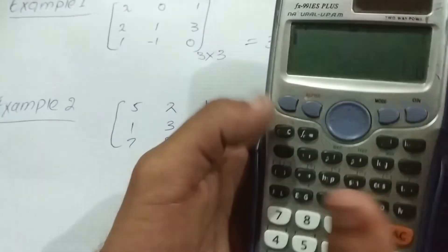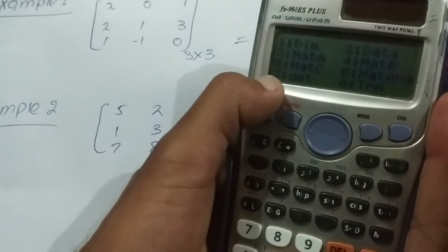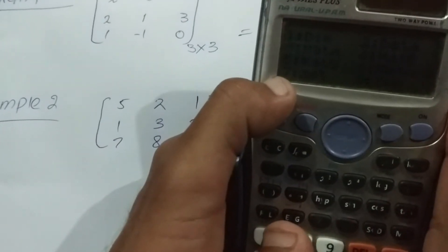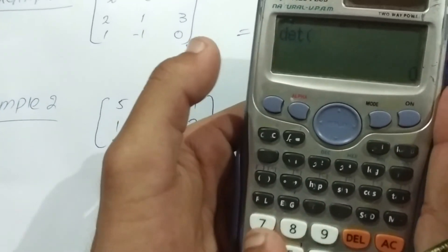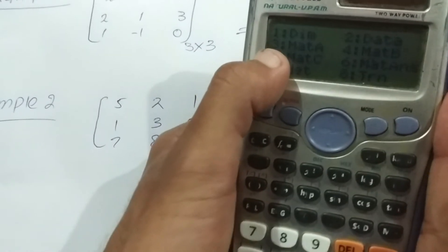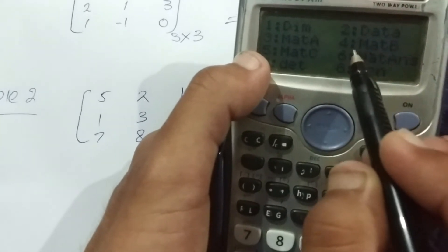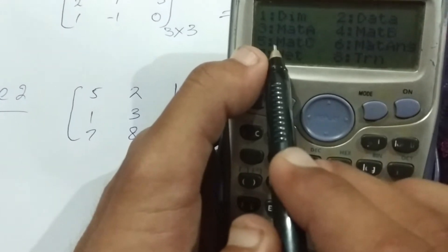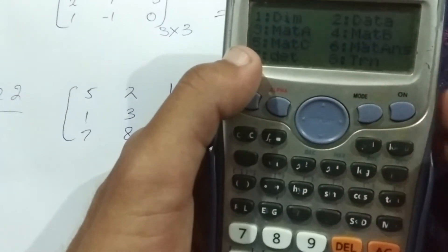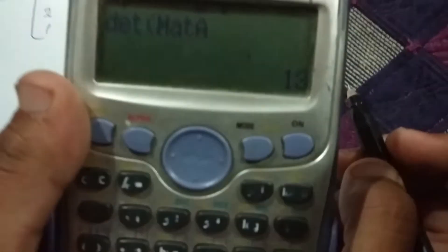Now this matrix is saved in mat A. Shift, 4, determinant. For determinant see here, it's 7th. Then again press shift, 4, and 3 for mat A. We have saved mat A, we press 3 button. This is 13, 13 is our answer.